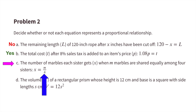Part C: the number of marbles each sister gets, x, when M marbles are shared equally among 4 sisters. x equals M divided by 4. This is the same thing as 4 times x equals M. So if there's a division sign or a multiplication sign, it tells me that there will be a proportional relationship.